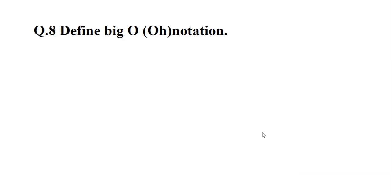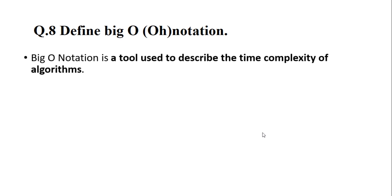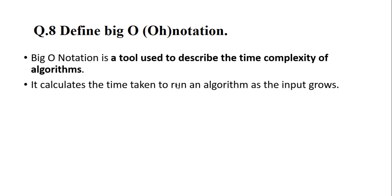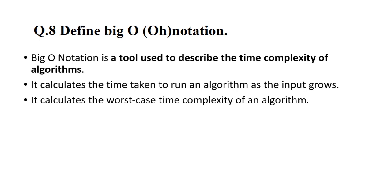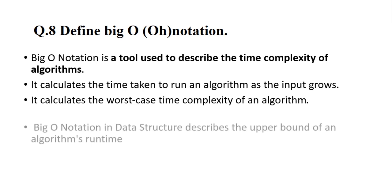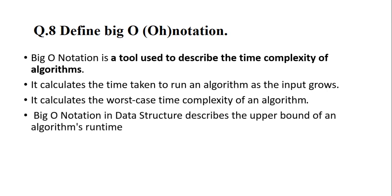Question 8: Define Big O notation. Big O notation is an asymptotic notation used for time complexity. It is a tool used to describe the time complexity of algorithms. It calculates the time taken to run an algorithm as the input grows. It calculates the worst-case time complexity of an algorithm. Big O notation in data structures describes the upper bound of an algorithm's runtime.